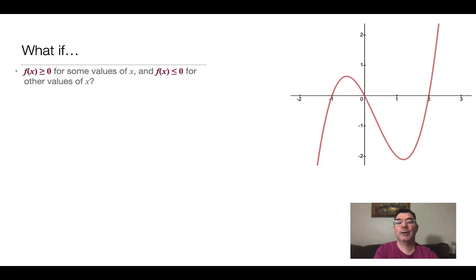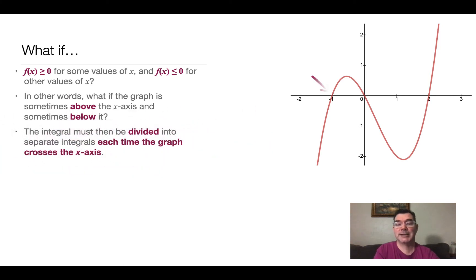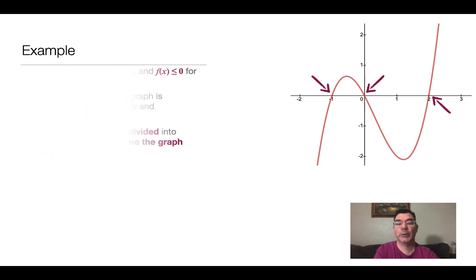Now we've talked about what it means to find the area if a curve is above the x-axis and when it's below the x-axis. Sometimes we have a curve that does both — sometimes it's above the x-axis, sometimes it's below. So how do I find the overall area? Every time the curve crosses the x-axis, I have to start a new integral, so I may have multiple integrals to deal with.